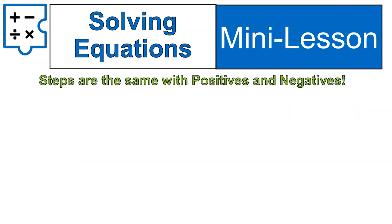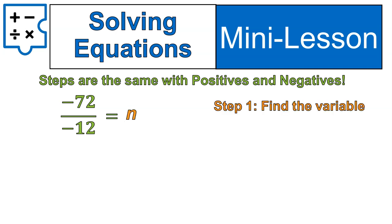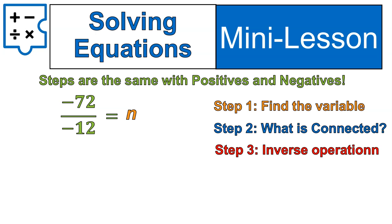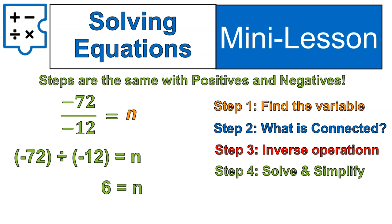Steps are the same with positives and negatives, so we're going to do a practice question here with negatives. This one here should be pretty straightforward, given our previous example. This one here has nothing connected to our variable, so we find our variable, but there's nothing connected to it, so we're not going to do an inverse operation. We're just going to divide. Negative 72 divided by negative 12 gives us positive 6. Negative divided by negative gives us a positive.